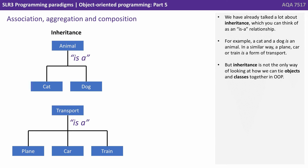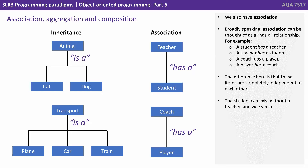But inheritance is not the only way of looking at how we can tie objects and classes together in OOP. We also have association. Broadly speaking, association can be thought of as a 'has a' relationship. For example, a student has a teacher, a teacher has a student, a coach has a player, a player has a coach.